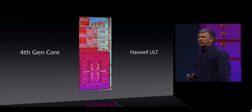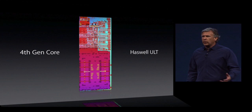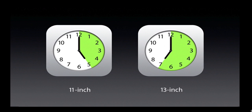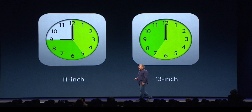Moving on to the MacBook Air update: it comes with the fourth-gen Intel Haswell chip, designed for power savings with 40% faster graphics. They didn't mention updates to the MacBook Retina or MacBook Pros. Battery life is significantly improved — the 11-inch goes from 5 hours to 9 hours, and the 13-inch goes from 7 hours to 12 hours, giving all-day battery life for both.